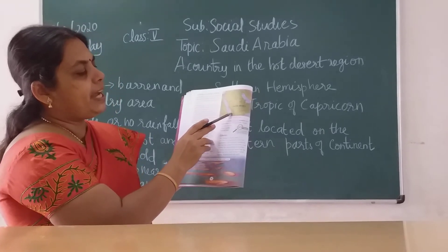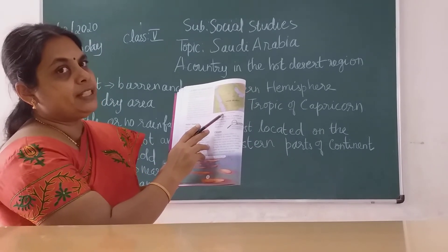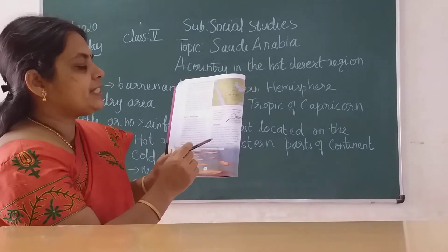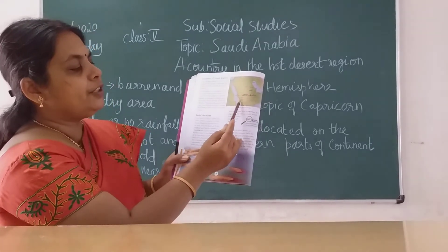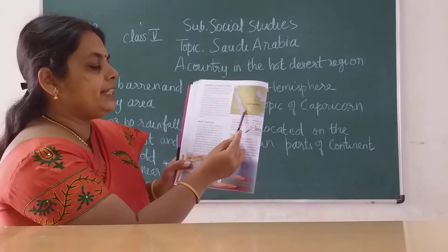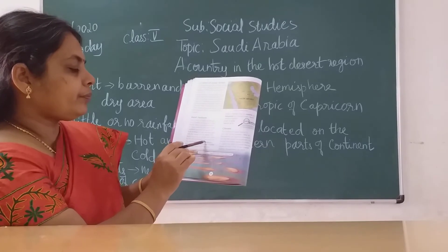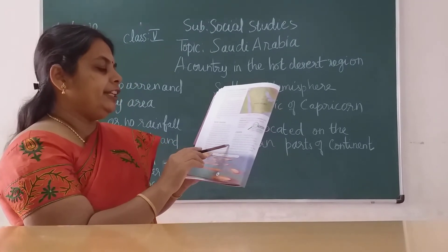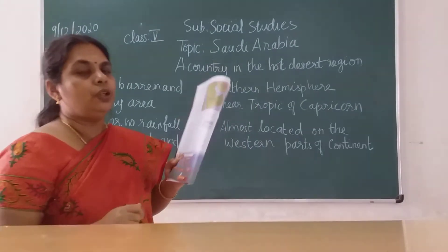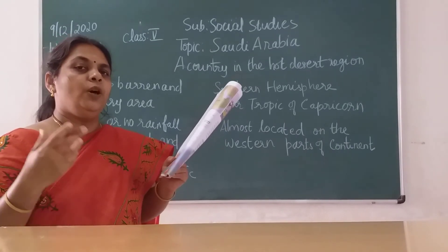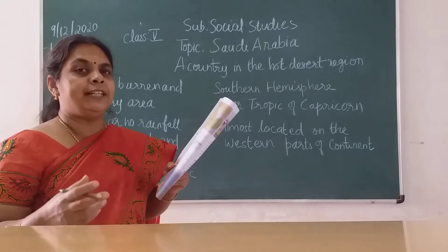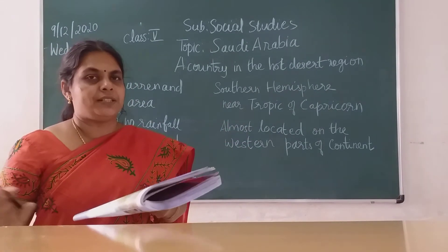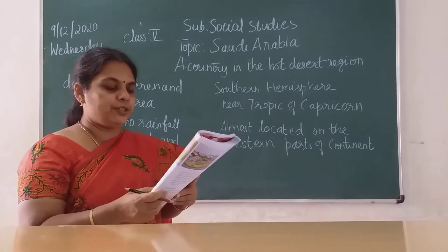To the west there are steep mountains along the coast of the Red Sea. The highest point is Jabal Sawda, which you can observe on the map. The slopes gently go down toward the northeast. Since it is a desert region, sand is blown by the wind and dunes are formed by the deposition of sand.